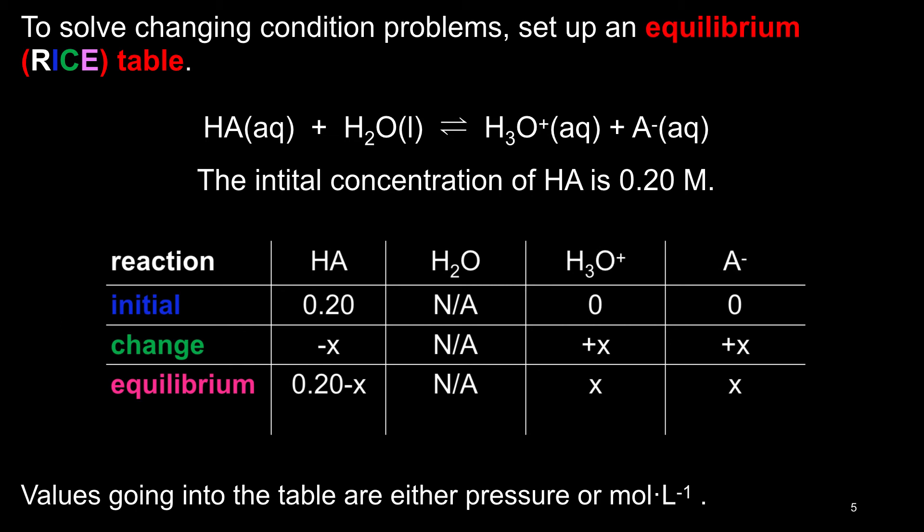Set the equilibrium expression equal to the equilibrium constant, which will be provided, and then solve for X. Plug X back into each equation in the bottom row to get the equilibrium concentrations of all species in the reaction.